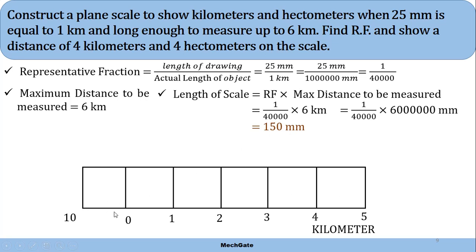Since 150 millimeters is divided into 6 equal parts, each division is 25 millimeters. We cannot easily divide 25 mm using a scale directly, so we use the angular line method to divide a line into equal parts. Draw a line at an angle less than 30 degrees, with a dimension that can be easily divided into 10 equal parts — for example, 30 millimeters, giving 3 millimeters each.